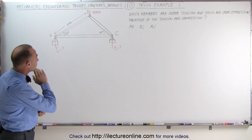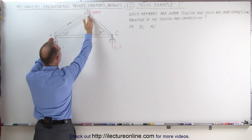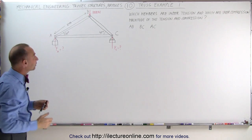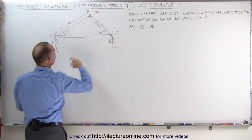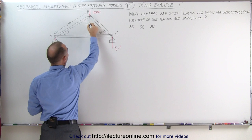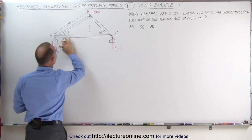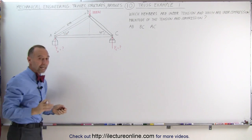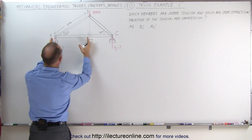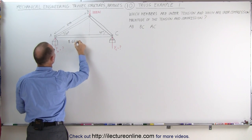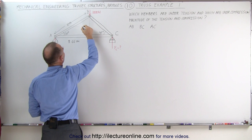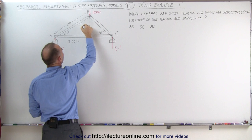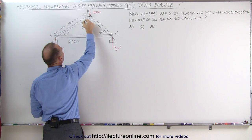First, we want to get the other dimensions. We only know that this one is 10 meters long, and we have a force of 1,000 newtons pushing down at the very top. We need to know the length of the other members. Based on the angles given, if we draw a vertical line this way, that section is equal to the hypotenuse times the cosine of 30 degrees, which is 0.866 — making this section 8.66 meters. And this section would be 10 times the sine of 30 degrees, which is 5 meters.